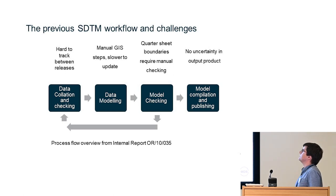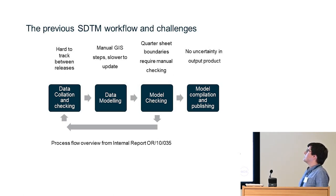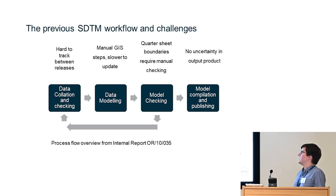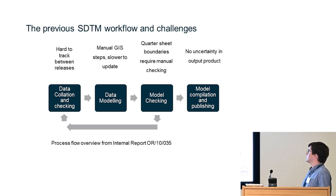The previous SDTM used the following process. Data was generally collected from various BGS datasets, mostly the SOBI borehole index. It was quite hard to keep track of this data between releases due to technological limitations. There was then a manual GIS process to model using a natural nearest neighbours algorithm per quarter sheet, where the UK was split into a number of quarter sheets. All of these quarter sheets then had to be combined to produce one map for the UK, which was quite tricky as each boundary required manual checking by geologists, delaying model compilation and publishing.